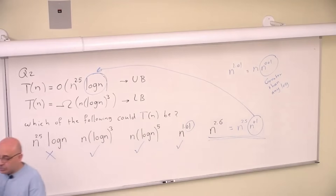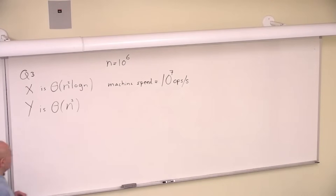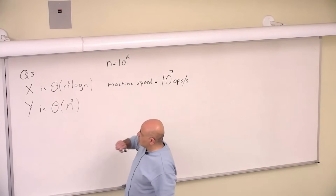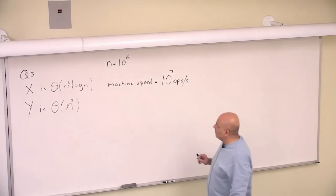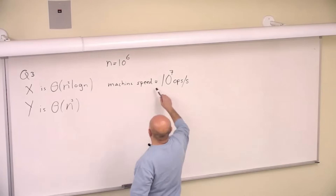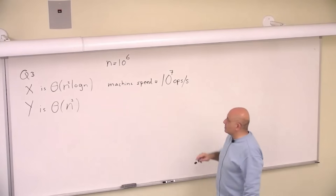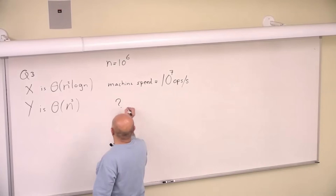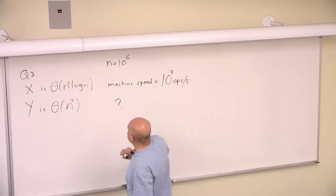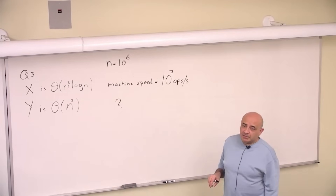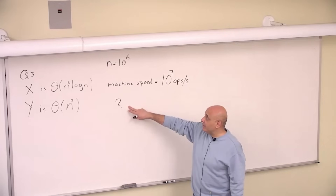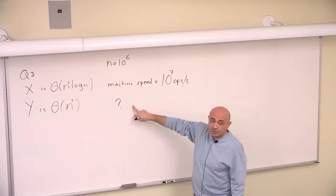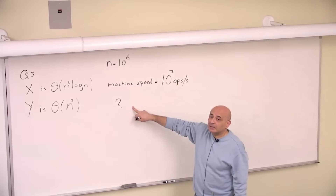Any questions on question number two? Let's discuss this. We have two algorithms — algorithm X with this asymptotic complexity and Y with this asymptotic complexity. Algorithm X is run on a machine with speed 10^7 operations per second. The question is: what machine speed do we need to run algorithm Y on in order to get the same execution time? Will this speed be greater or smaller? Why does it have to be greater?